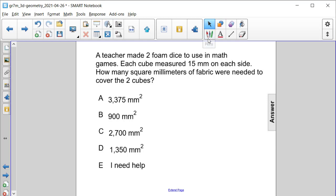Alright, so let's actually draw a picture here so that we have a better understanding of what's going on. So we have two dice, and each die has side lengths that are all equal to 15 millimeters.